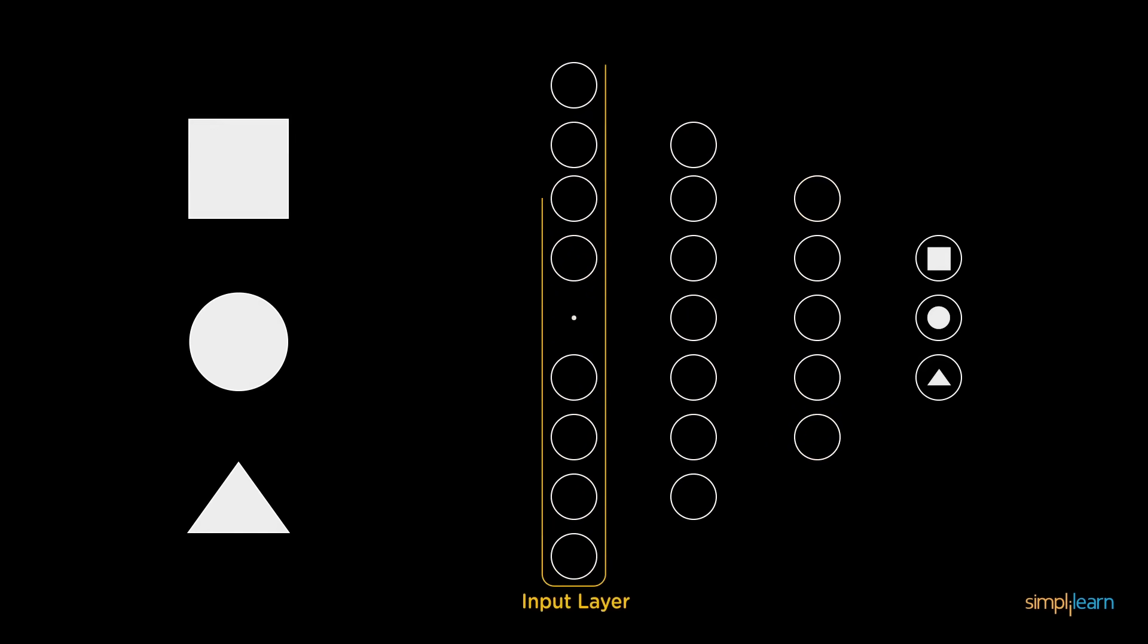First, we have the input layer, which receives the input. The output layer predicts our final output. In between exist the hidden layers which perform most of the computations required by our network.